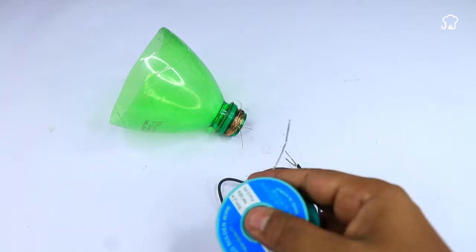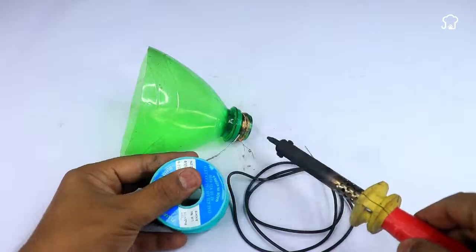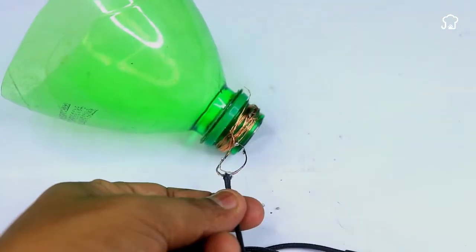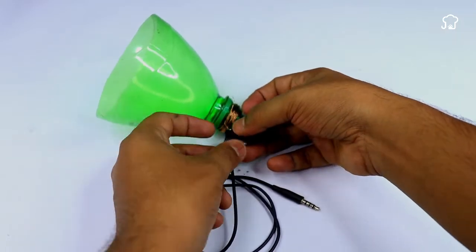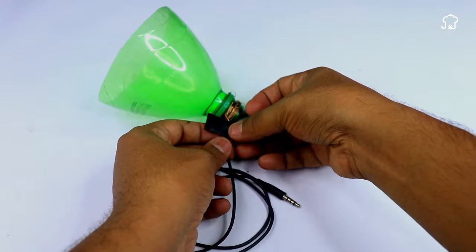Using a heater, it can be a heat gun or a lighter, slightly heat the aluminum wire that surrounds the nozzle of the bottle. Then, join the aluminum wires with the cables of the headphones. This connection will allow the sound to be transmitted through the cables to the nozzle of the bottle.